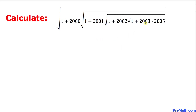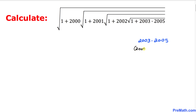Let's get started with the solution. Let's focus on the innermost part first — 2003 times 2005. I'm going to tweak them a little bit: I can write 2003 as 2004 minus 1 and 2005 as 2004 plus 1.